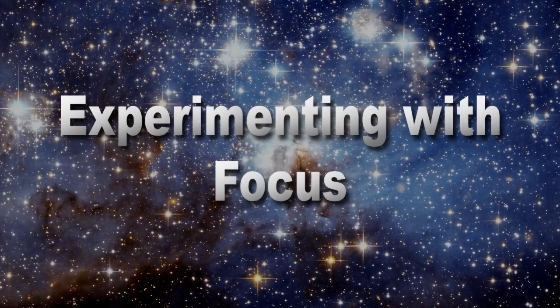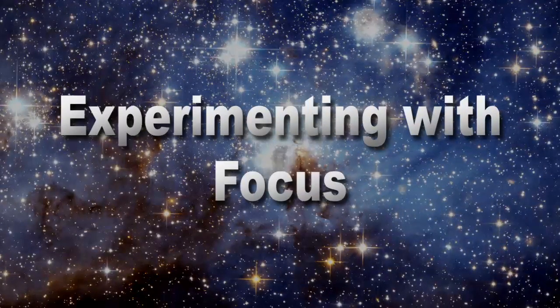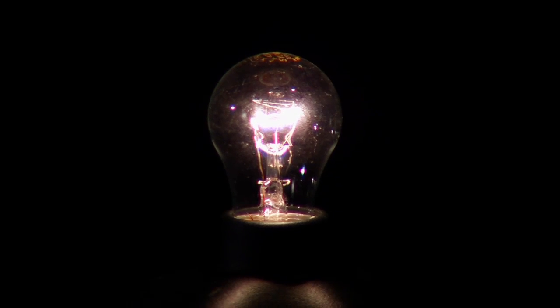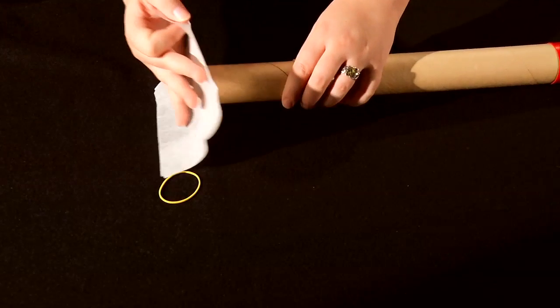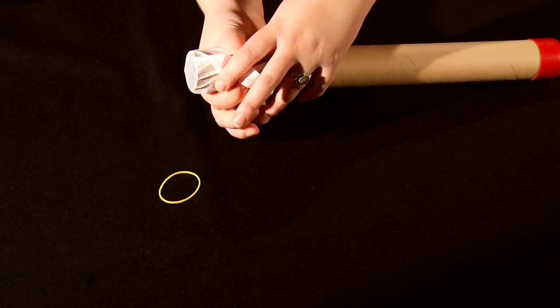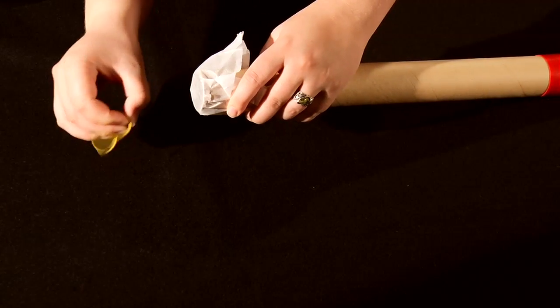Since you will probably be using your telescope indoors, one of the best things to use to experiment with focus is a clear light bulb. To do this, you should replace the eyepiece end of the telescope with a piece of white tissue paper held in place with a rubber band.